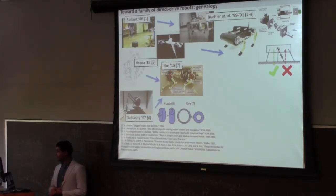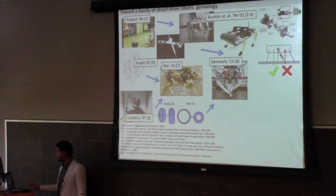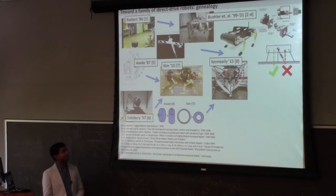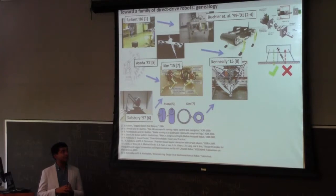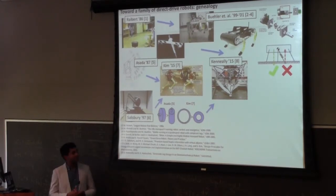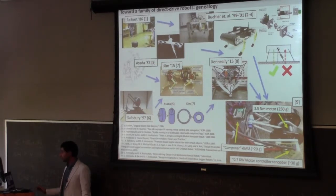We've pushed the idea of removing obstructions to transparency — gearboxes — to the extreme, getting rid of gears completely. Gavin built a leg that is probably one of the only legged things you'll see without a gearbox at all. All of the robots I'm going to talk about have this direct drive infrastructure.